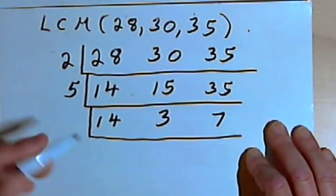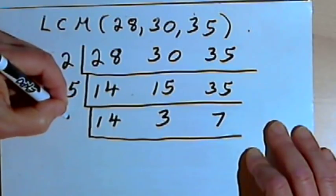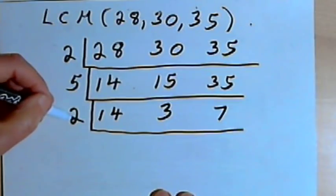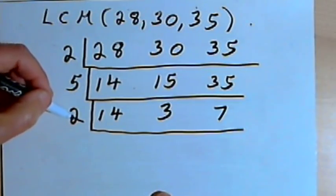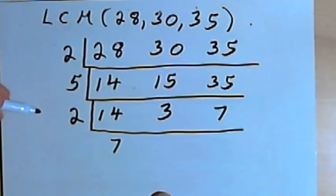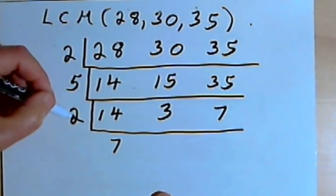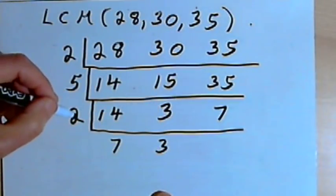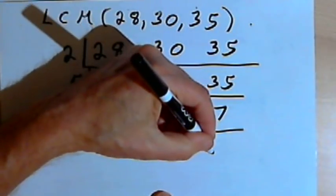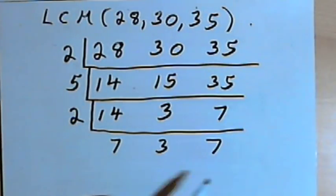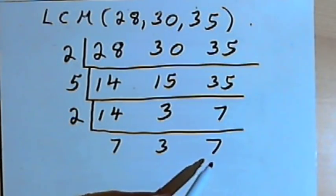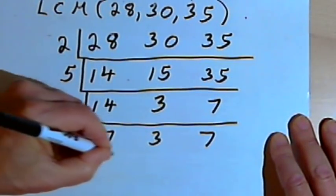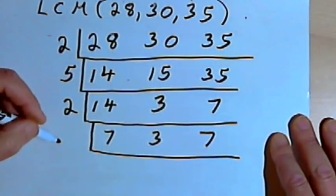I can divide 14 by 2. I can't divide anything else by 2, but that's okay. So I'll write a 2 to the left of the box. 2 goes into 14 seven times. 2 does not divide into 3, so I'll bring down the 3. 2 does not divide into 7, so I'll bring down the 7. Now I've got prime numbers in the bottom, but I've got 7 and 7 — that's repeated. So I'm going to start again, draw a box, and divide out that 7.